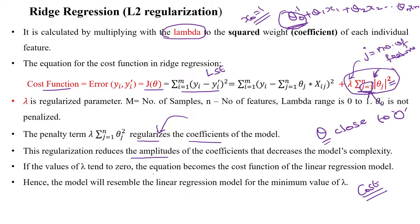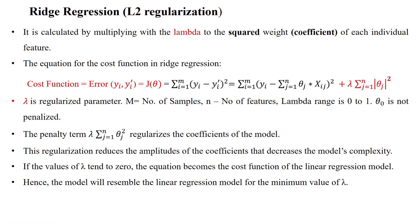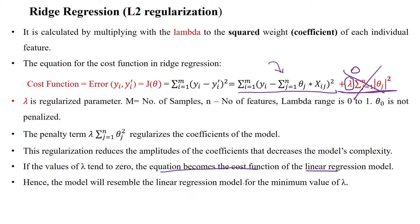The amplitude of the coefficients is decreased to reduce the model's complexity. If lambda tends to 0, then the entire penalty term becomes 0, and the model appears as a simple linear regression. When you give a minimum lambda value close to 0, the model resembles the linear regression model.